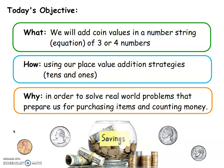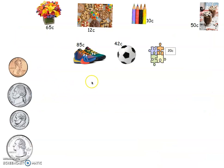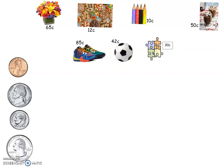I'll show you a couple different strategies and you can pick the one that is best for you. So I have some items here. You can pause the screen at any time and go shopping yourself, pick the items that you would like to purchase and add the value of them together. Right here I've decided that I'm gonna buy these shoes for 85 cents, this soccer ball for 42 cents, and this puzzle for 20 cents.